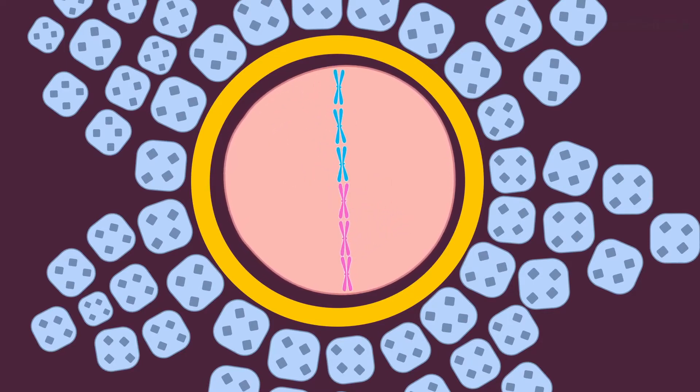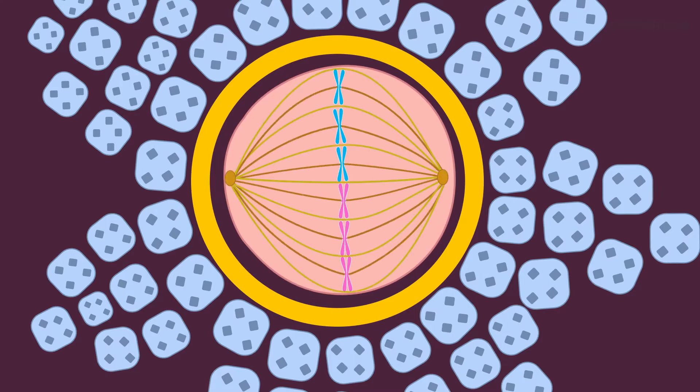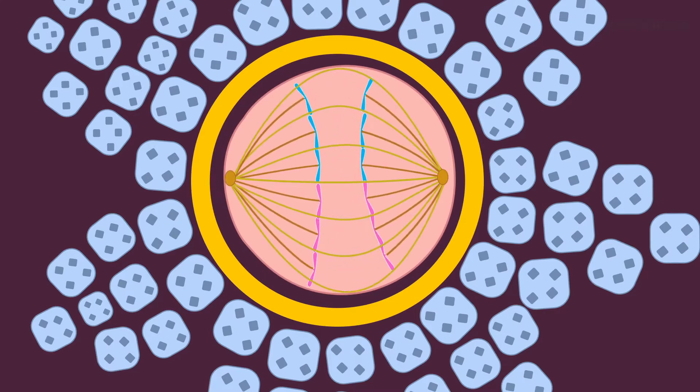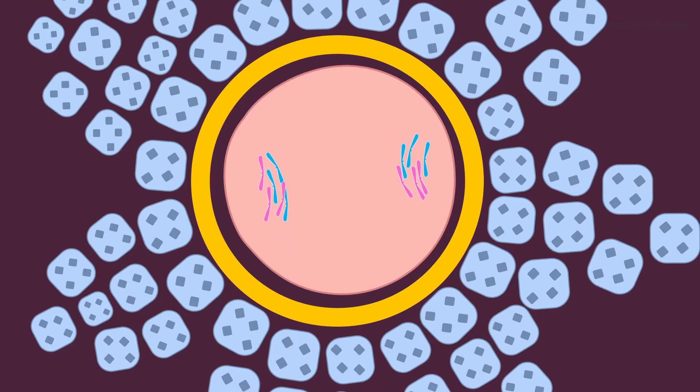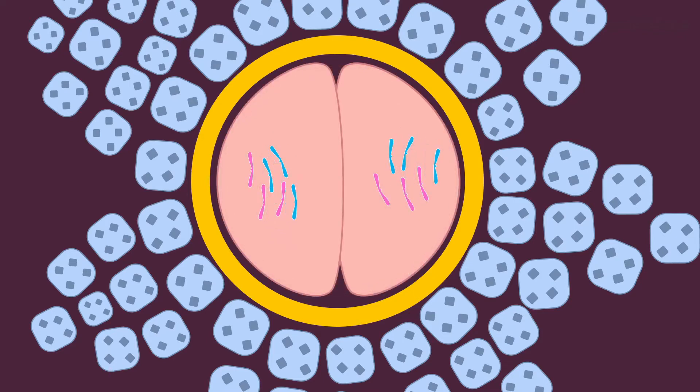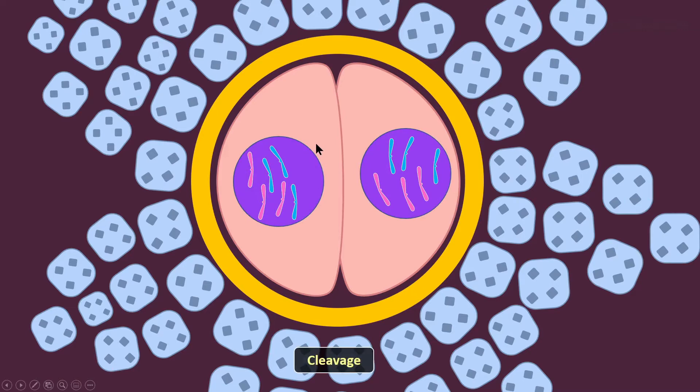arrange themselves on the metaphase plate, and then undergo a process of mitosis and specialized mitosis in which the daughter cells are almost half the size of the parent cells. It is called cleavage. Their growth is limited by the presence of the zona pellucida layer.